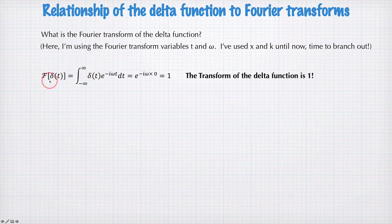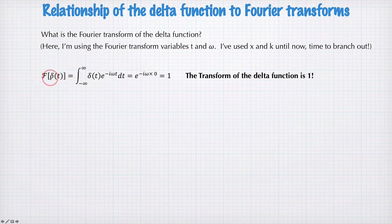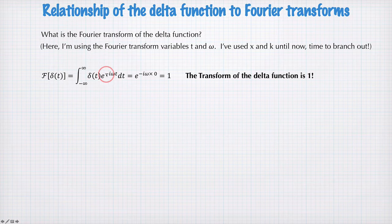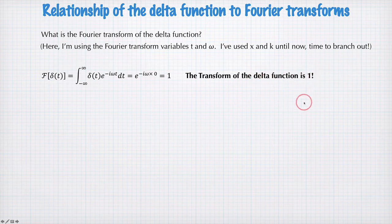So first of all, the Fourier transform of delta t is just given by this integral here. And we know what happens when we integrate a function that's multiplied by delta t. It just selects out the value of this function at t equal to zero. So in other words, this, which is equal to one. So the Fourier transform of the delta function is equal to one.